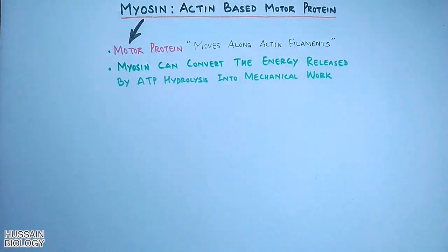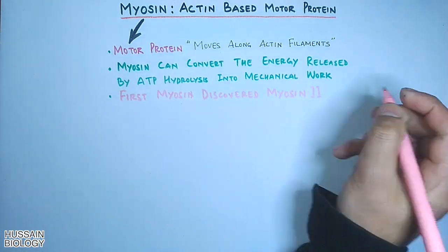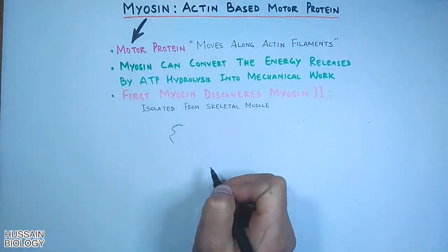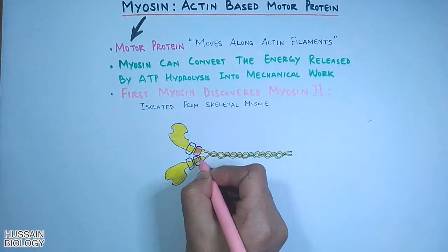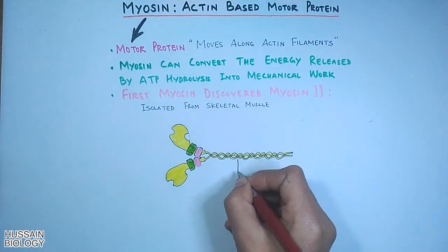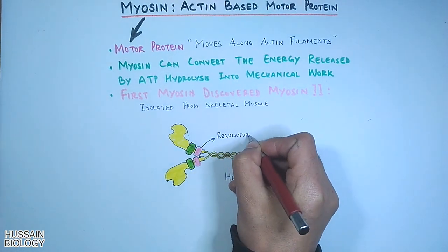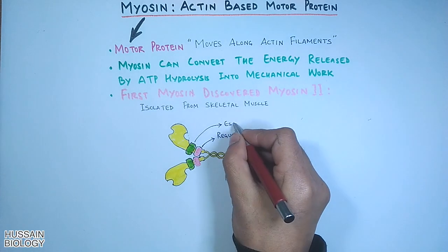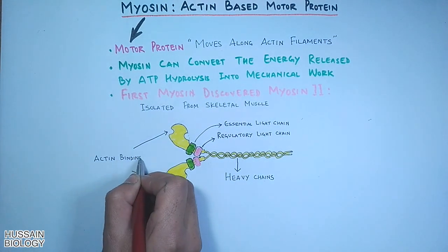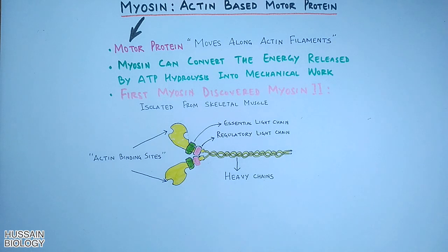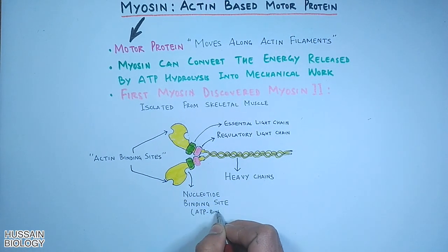The first myosin to be discovered was myosin 2, isolated from skeletal muscle. Here in this diagram we can see the basic structure of myosin 2 protein. This is the heavy chain, the pink colored part is the regulatory light chain, and the green one is the essential light chain. These two sites on the head domain are the actin binding sites, and on the inner side we have the nucleotide binding site where ATP gets bound.